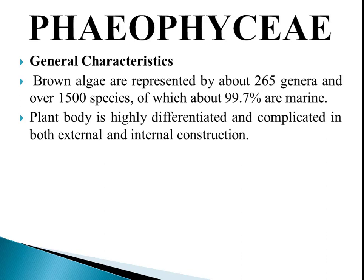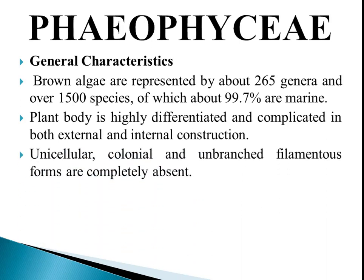The plant body is slightly differentiated and complicated in both external and internal construction — we can differentiate them into different parts. Unicellular, colonial, and unbranched filamentous forms are completely absent in this group.